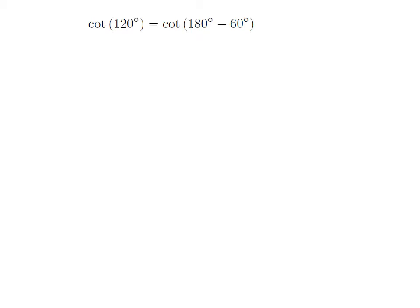As 120 degrees is equal to 180 degrees minus 60 degrees, so cotangent of 120 degrees is equal to cotangent of 180 degrees minus 60 degrees.